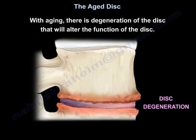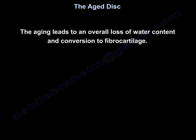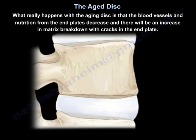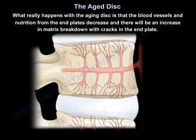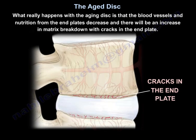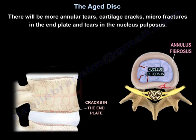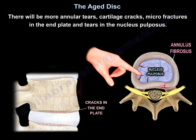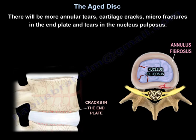With aging, there is degeneration of the disc leading to overall loss of water content and conversion to fibrocartilage. What happens is the blood vessels and nutrition from the end plates decrease, there is increased matrix breakdown, cracks in the end plate, more annular tears, cartilage cracks, micro-fractures in the end plate, and tears in the nucleus pulposus.